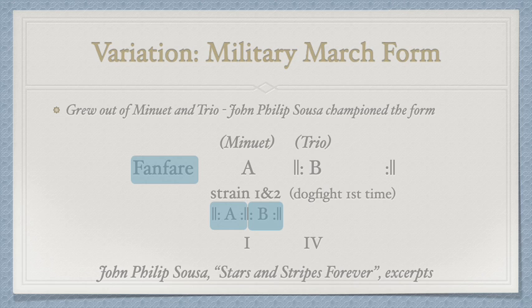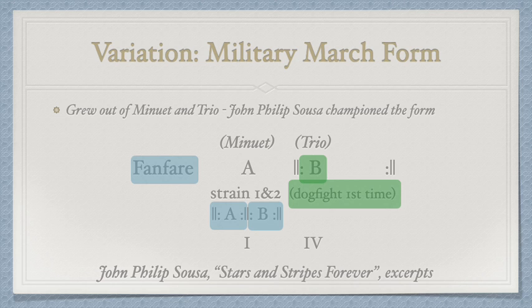The trio adds a flat, or removes a sharp, from the key signature, modulating us to the key of the subdominant. Most marches repeat this trio, but they place a short and intensely dramatic passage in between these repetitions, which we call the dogfight, or the break strain. The return of B sees the soft trio melodies amplified and celebrated until the conclusion of the form. The iconic piccolo solo in Stars and Stripes Forever is featured at this particular point in the form.